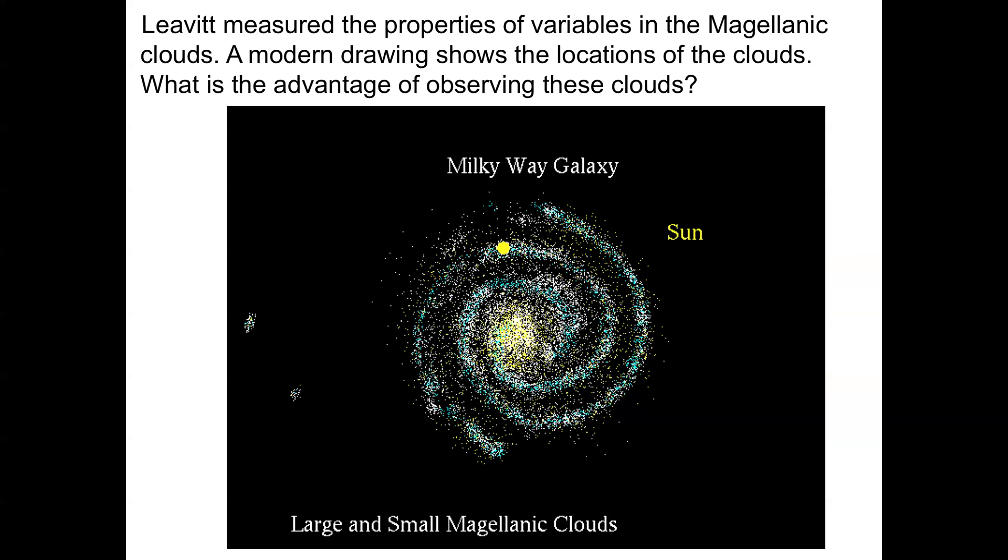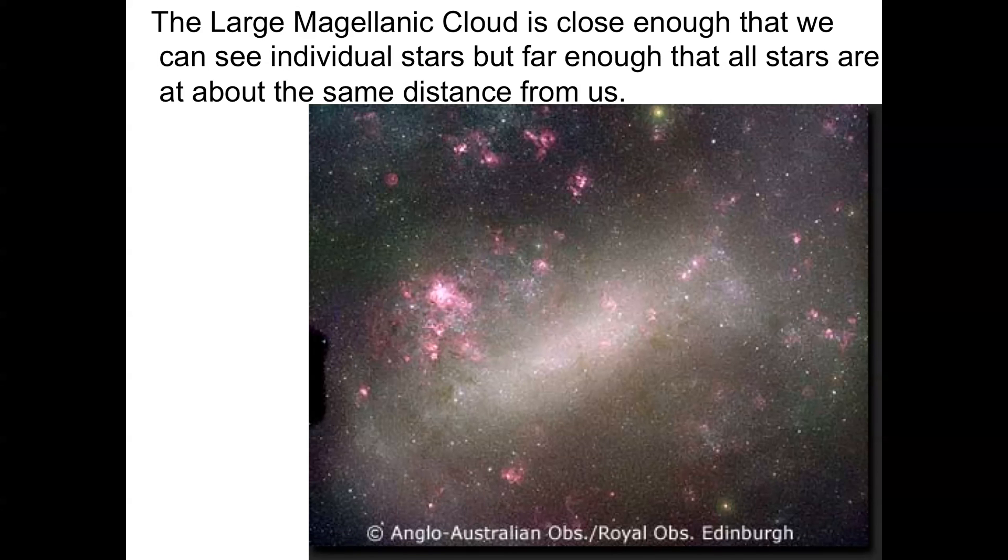What Leavitt did was looking at the properties of variable stars in the Magellanic clouds. The Magellanic clouds are companion galaxies to our own galaxies. They're about 150,000 light years, about 50 kiloparsecs from us, from the sun. So they're quite far outside the galaxy and they're fairly small objects. So what was the advantage of observing these clouds? The advantage was that the clouds, in particular the large Magellanic cloud, are close enough that we can see individual stars but far enough that all the stars are about the same distance from us. That means that the flux of the stars corresponds to their luminosity because they're all at about the same distance. So the 1 over d squared is the same factor for all of them. So until you know the distance to the Magellanic cloud, you don't know the absolute luminosity, but at least you know the relative luminosity of all the sources within it.